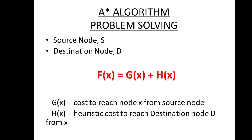The A* algorithm finds a measure called f(x) at every node in the graph. That f(x) is calculated by the formula: f(x) = g(x) + h(x), where x is a node in the graph. g(x) refers to the cost of coming to node x from the source node s — the same way we calculate it in Dijkstra's.